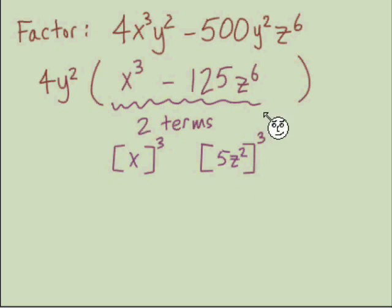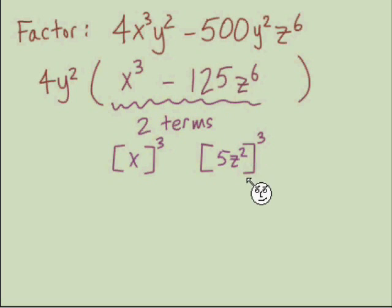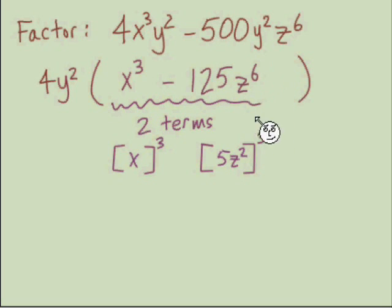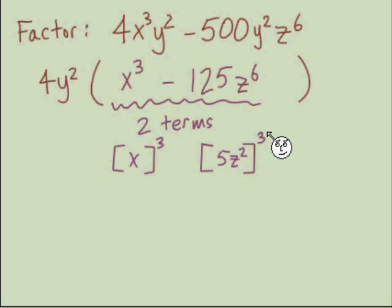For something to the third power to equal our second term: we need 5³ to give us 125, and z² to the third power gives us z⁶. Remember, with an exponent outside parentheses it's a product — we multiply exponents, so 3 times 2 equals 6.